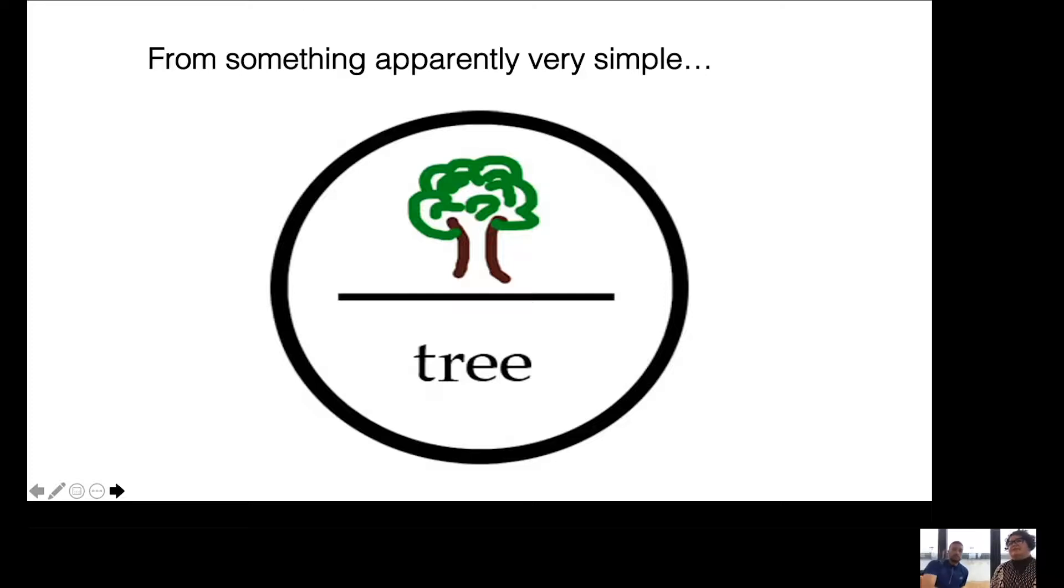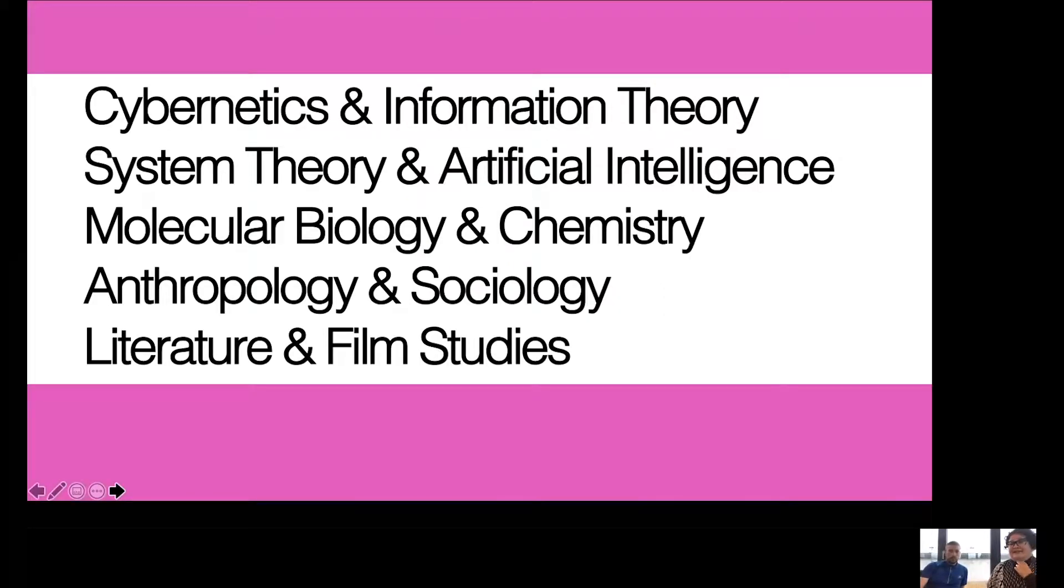So from something really simple, like we have units that shaping us, the whole cybernetics and information theory come up, the whole way that you program computers, system theory, you just say it, the people that study artificial intelligence, biology, because this is a system, and the way that molecules talk to each other is based on this.